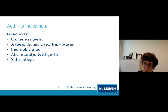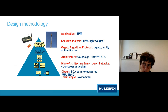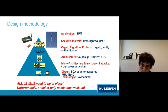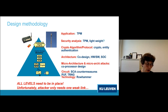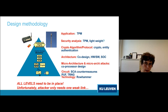Coming back to the design methodology: all levels of the abstraction pyramid need to be in place, because an attacker only needs one weak link. Assumptions made at one level do not necessarily hold when you go down. Micro-architectural attacks are a clear example: the software instruction level provides isolation, but at the micro-architecture level that isolation assumption is broken. That is what you have to think about for secure design.